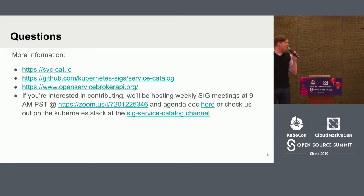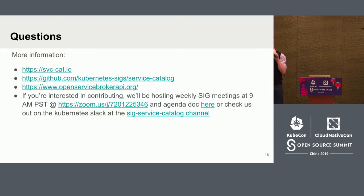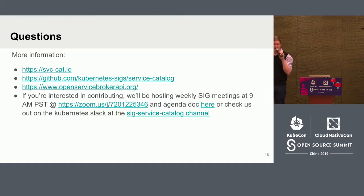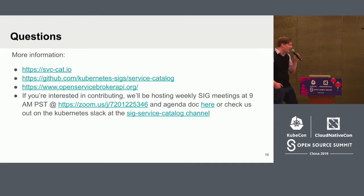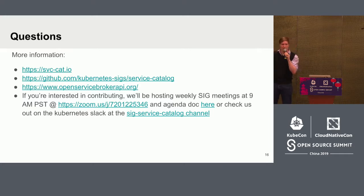Before I take questions, a couple of websites: svcat.io is our main docs website where we tell you what Service Catalog is and how to use it. The Kubernetes SIG Service Catalog repository is our main repo containing the code for the API server, the controller, the CLI, pretty much everything. OpenServiceBrokerAPI.org is the main website listing information about the OSBAPI spec, which we are an implementation of. And if you're interested in contributing, we host weekly SIG meetings on Monday at 9 a.m. PST, as well as having people available on our Slack channel pretty much around the clock. Feel free to pop into one of those two channels and say hi.